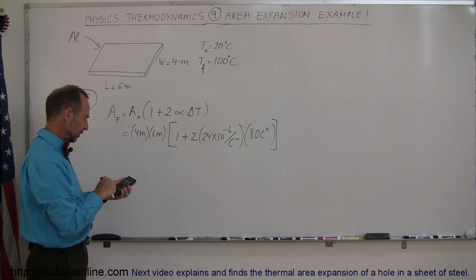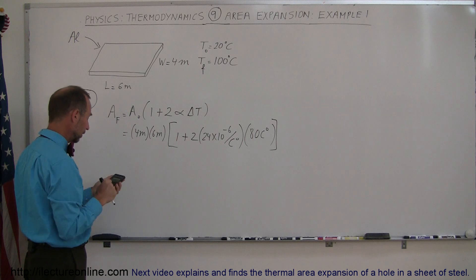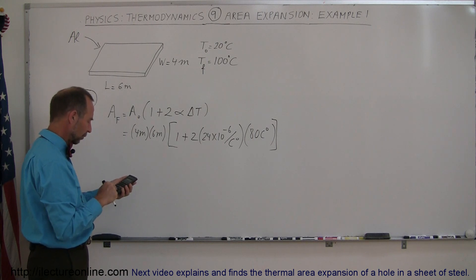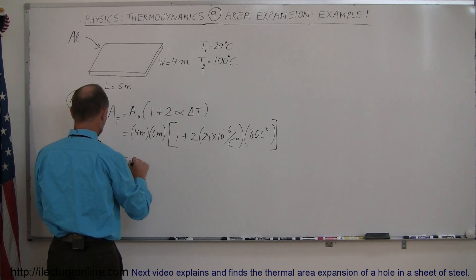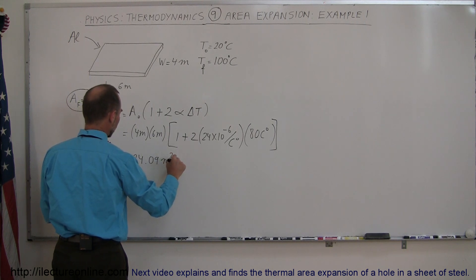24 e to the 6 minus times 80 times 2, we add that to 1, and then we'll multiply that times the original area of 24, so times 24 equals, and so this is equal to 24.09 meters squared, area final.